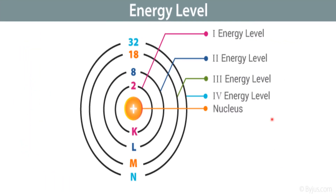In this picture, I have mentioned the energy levels, their names, and the number of electrons in each orbit. K is the first shell — smaller in size, first energy level, it can hold only 2 electrons. L shell is the second energy level and carries 8 electrons. M shell is the third energy level with a capacity of 18 electrons. N shell is the fourth energy level — larger in size, it can hold 32 electrons.